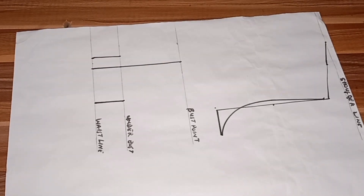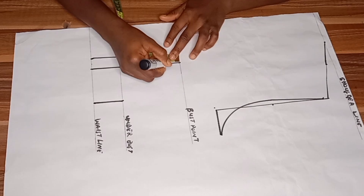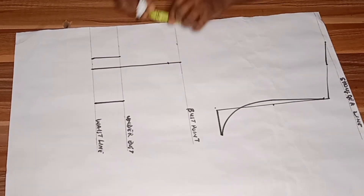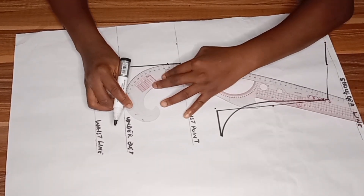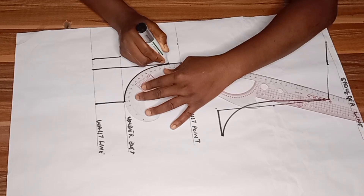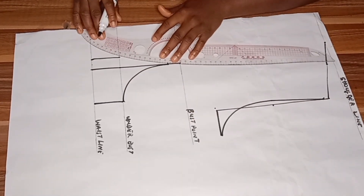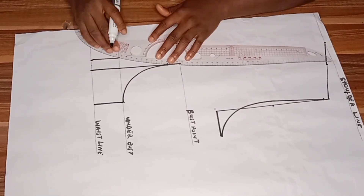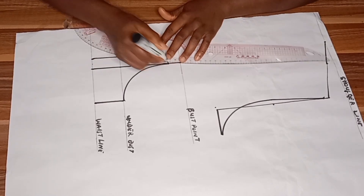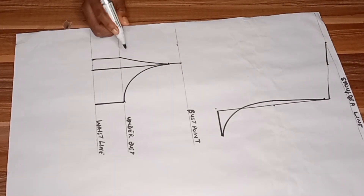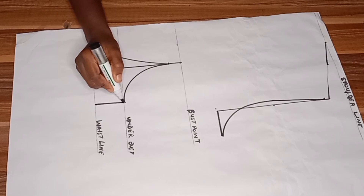On the bust points I'll come down by one inch so that your bust will not be too pointy. Using my curve ruler I'll connect it. Please arrange your curve ruler very well — this also matters when you are trying to draft a bustier. This part — the curve should not be too sharp, it should be slightly sharp — then I will blend in any sharp points.